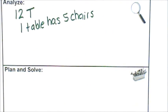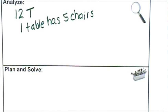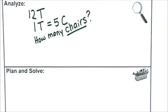Next, I'm going to plan and solve. What operation is implied by the problem? Well, I'm trying to figure out the number of chairs in the library, so that means I'm joining. That would be addition or multiplication. What strategy can I use to solve the problem? I'm going to draw a strip diagram to help me figure out if I'm adding or multiplying.